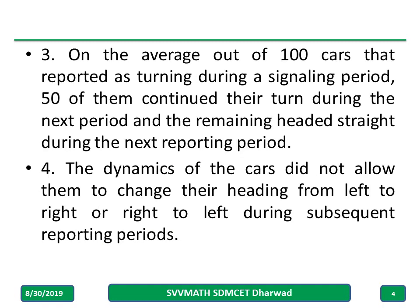These are the data given. On the average, out of 100 cars that reported as turning — either left or right — 50 of them out of 100 continued turning during the next period, and the remaining 50 headed straight. The dynamics of the cars are such that there is no chance to move from left to right or right to left — there is no turning from right to left or left to right.